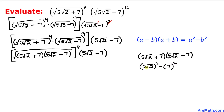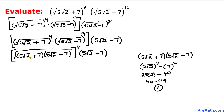Applying the identity, the radicand becomes: 5 times square root of 2, whole squared, minus 7 squared. That gives us 25 times 2 minus 49, which is 50 minus 49, equal to 1. So this entire radicand simplifies to just 1.